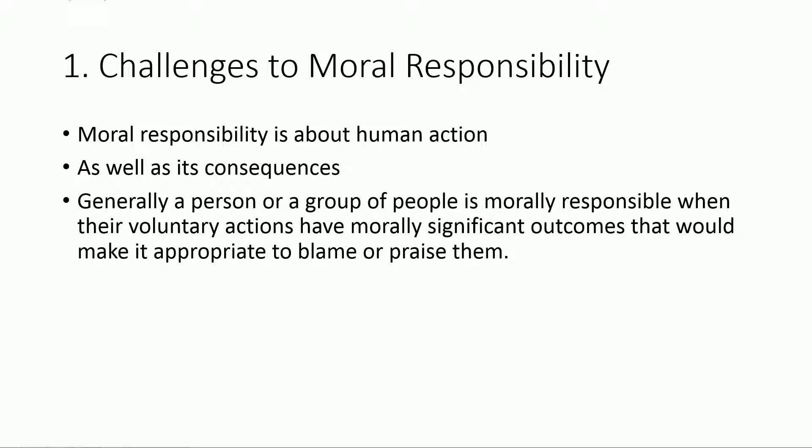Second, the subject must have knowledge of and be able to consider the possible consequences of their actions. We tend to excuse someone from blame if they could not have known that their action would have led to harmful events. If we perform an action and we were not aware of the possible outcomes and a negative consequence does occur, we're going to excuse responsibility because the intent wasn't to do any harm. Third, the subject has to be able to freely choose to act in a certain way — it does not make sense to hold someone responsible for a harmful event if their actions were completely determined by outside forces.